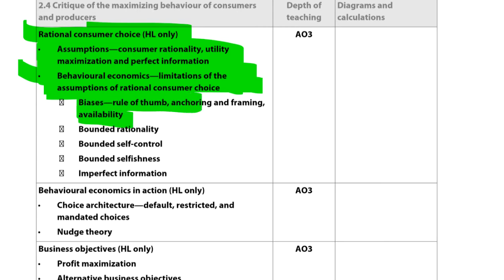Biases include rule of thumb, anchoring, and framing. Rule of thumb is a mental shortcut — for example, assuming one liter of milk should cost one Australian dollar in 2014. That's an anchor price. When you see milk cheaper than that anchor, you perceive it as a good deal without fully calculating your marginal utility. These biases trip up the rational consumer assumptions.